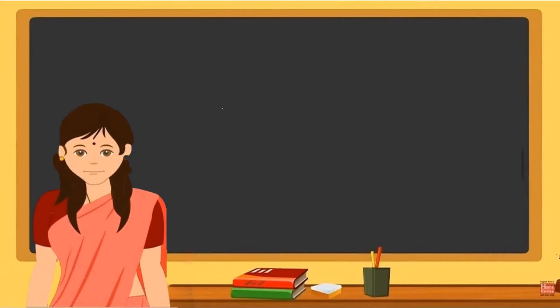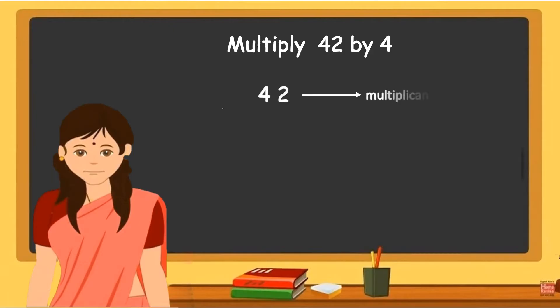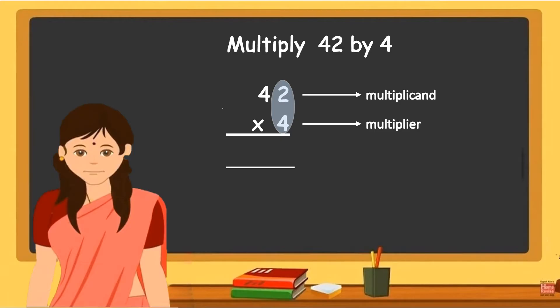Let's begin. Multiply 42 by 4. First you have to arrange the multiplicand and the multiplier. Write the multiplicand 42 on the first line, and below that put the multiplication sign and write the multiplier 4. Then draw the line and start multiplying. First multiply 4, which is the multiplier, into the units digit in the multiplicand — that is 4 into 2.